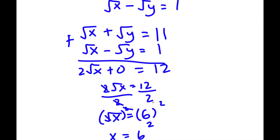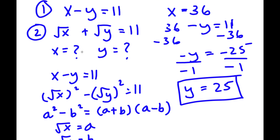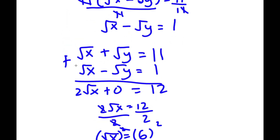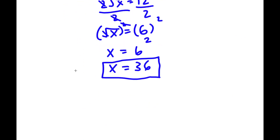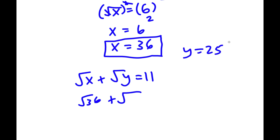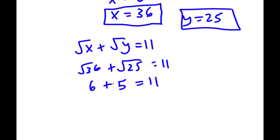So I have y equals 25 and x equals 36. Now we have to plug this into the second equation to check if it's right. Our second equation was the square root of x plus the square root of y is equal to 11. x is 36 and y is 25, so we have the square root of 36 plus the square root of 25 is equal to 11. The square root of 36 is 6, plus the square root of 25 is 5, so we have 6 plus 5 equals 11. And 6 plus 5 is indeed 11, so 11 equals 11.